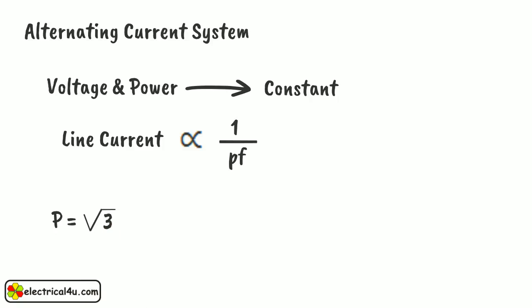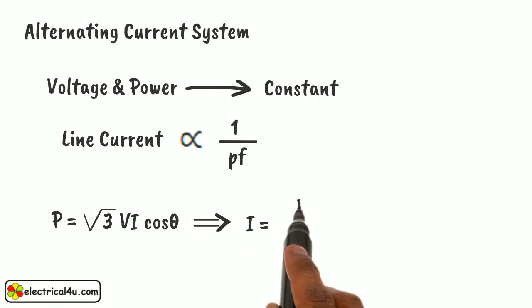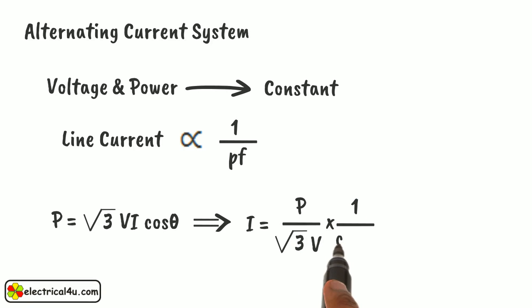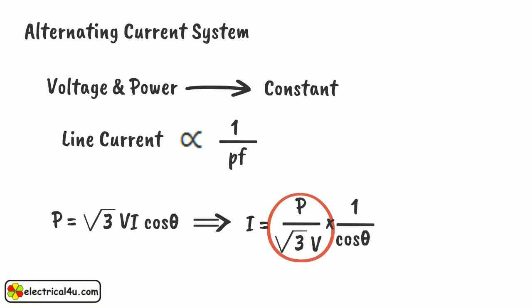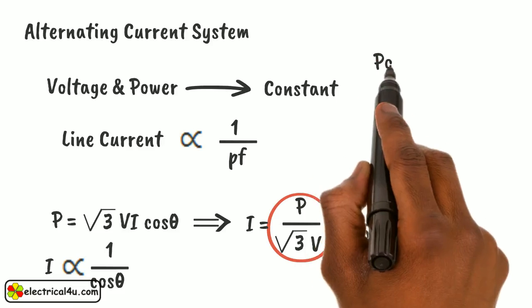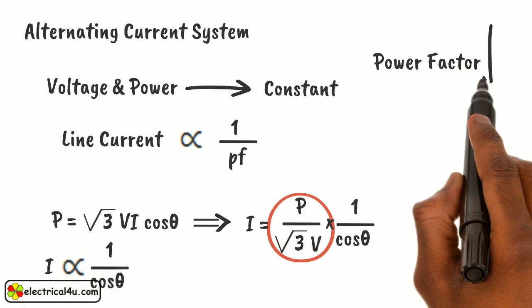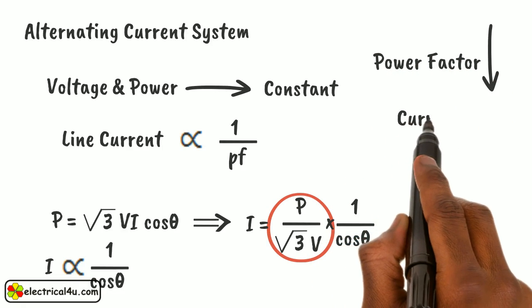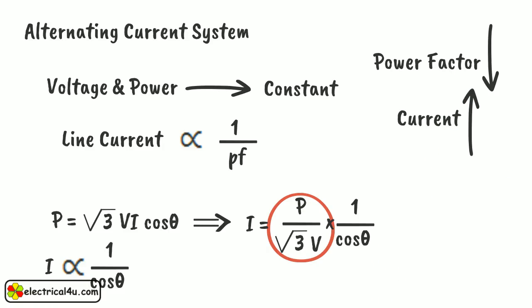That is, P equals root 3 · V · I · cos θ, which implies I equals P divided by root 3 · V, multiplied by 1 divided by cos θ. Here, the factor P by root 3 V is taken as constant. The line current is inversely proportional to the power factor cos θ. So, if the power factor of a system becomes low, the current of the system becomes large. All the effects of poor power factor are due to higher current in the system.